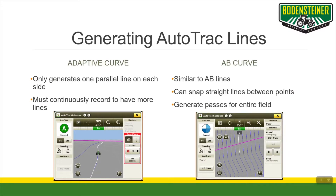You have to drive the entire way across the field and then you're done with your recording session. This will automatically generate five guidance lines on each side of you, and more guidance lines will appear as you drive further and further through the field. This means that you can drive to any point in the field at any time and begin auto-tracking on that exact same line that you recorded.